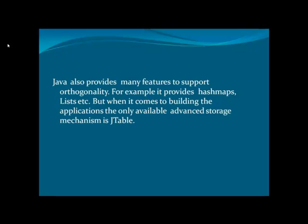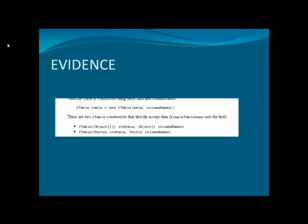Let's observe the orthogonality of Java. Java also provides many features to support orthogonality, for example hashmaps, lists, etc. But when it comes to building applications, the only available advanced storage mechanism is J-Tables. In the evidence slot, the particular code frame portrays how a J-Table is developed in Java.